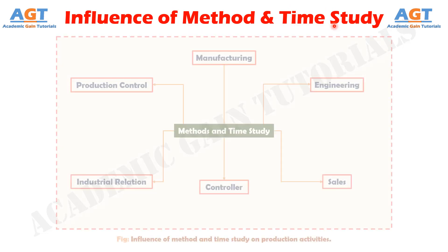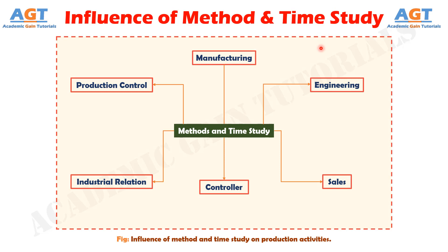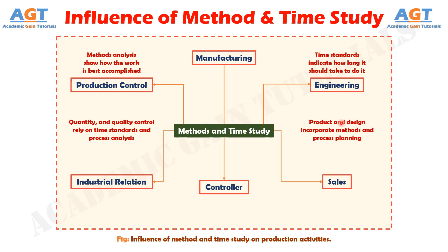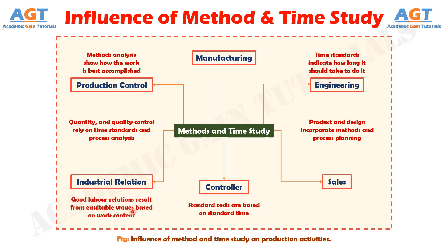The influence of method study and time study on production activities is shown in this figure. Methods analysis shows how the work is best accomplished; time standards indicate how long it should take to do it. Quantity and quality control rely on time standards and process analysis. Product and design incorporate methods and process planning. Standard costs are based on standard time, good labor relations result from equitable wages based on work content, and product cost is largely a function of manufacturing methods and measurement control.